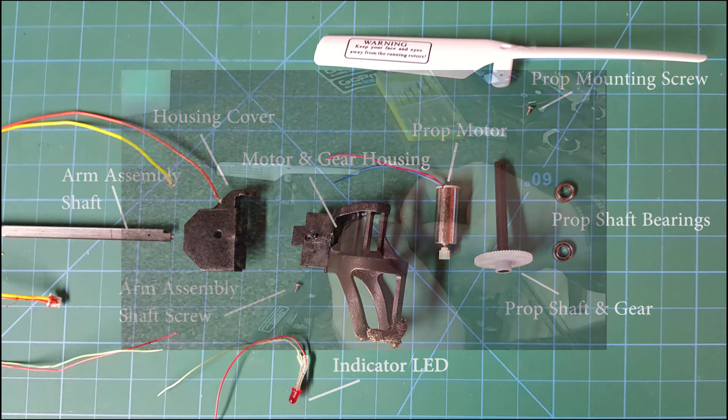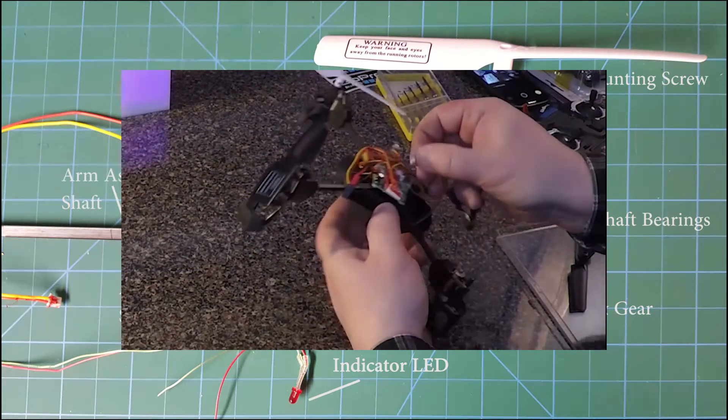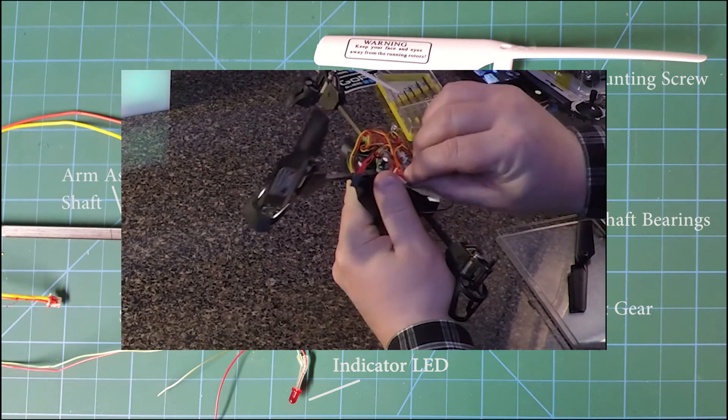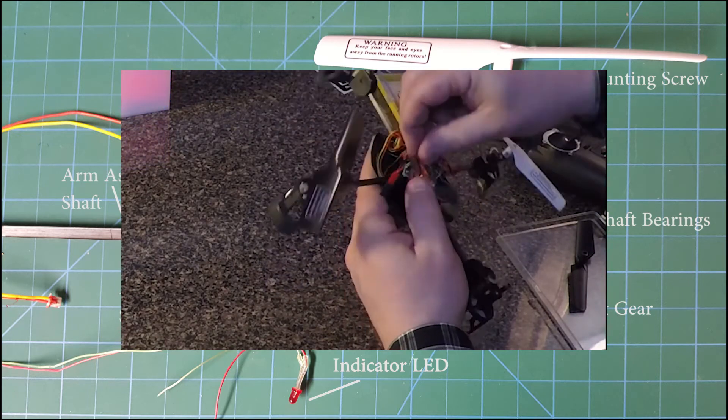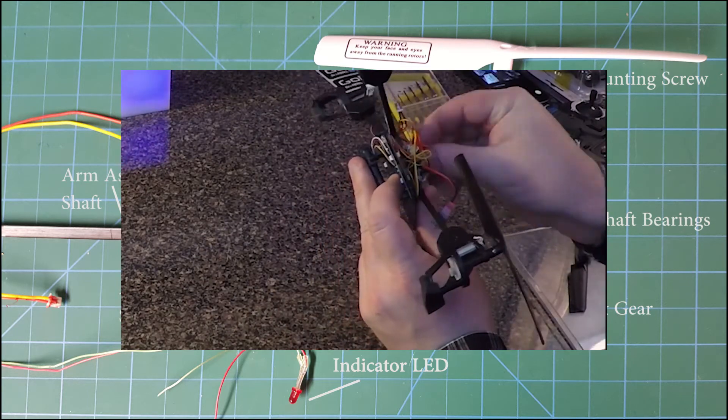Here's a link to the video I made that will show you how to replace the whole arm assembly, which is basically two screws, two plug connectors, and that's it.